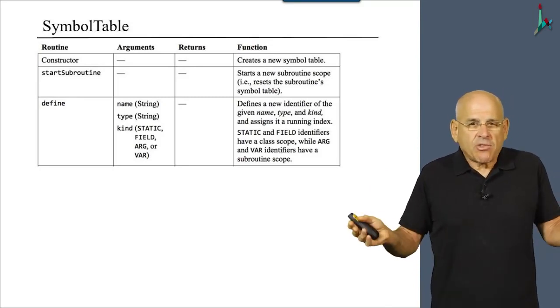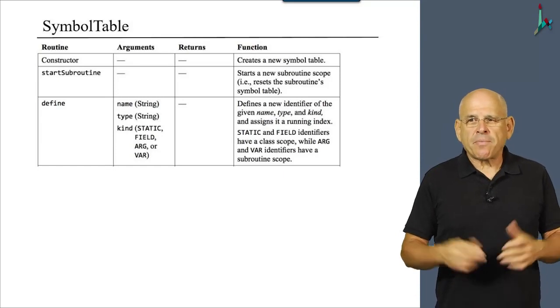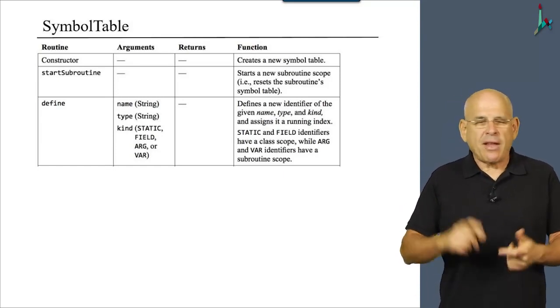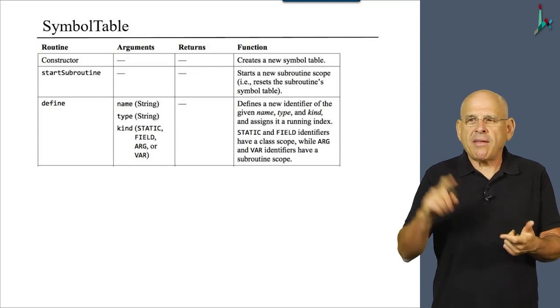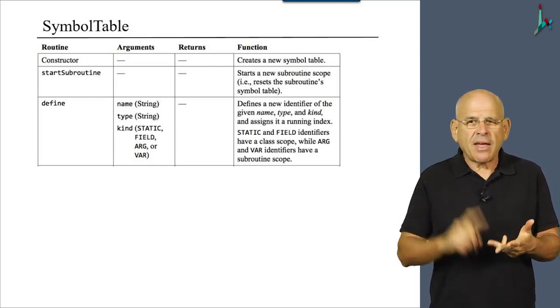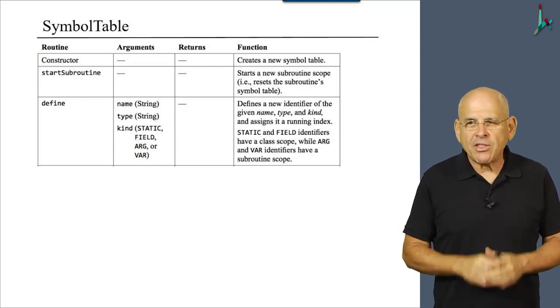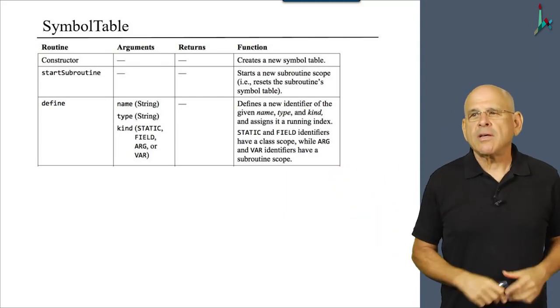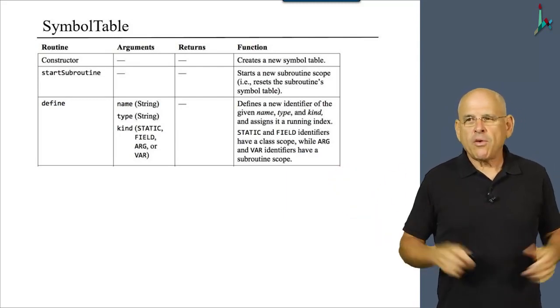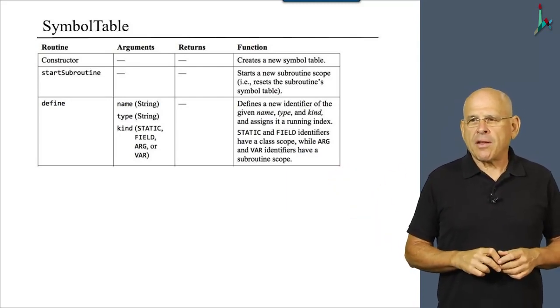Then perhaps the most interesting method is the method that adds a symbol to the table. It's interesting, but it's straightforward. It receives various items of information. The name of the symbol that we want to add, the type of the symbol, and the kind. And based on this information, it adds a new tuple, if you will, to the symbol table.